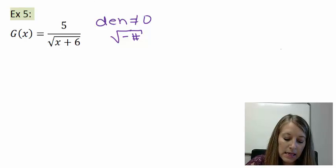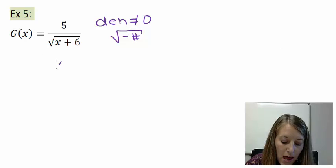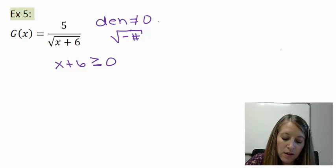In the last example, if we take care of the square root problem, we know that x plus 6, for it to be positive, it has to be greater than or equal to 0. But if this is equal to 0, then that faces my second problem here, where my denominator, my whole denominator itself, cannot be 0.